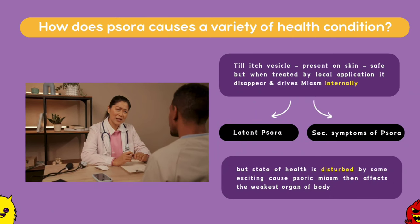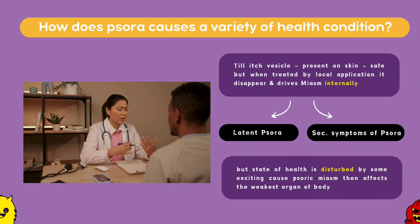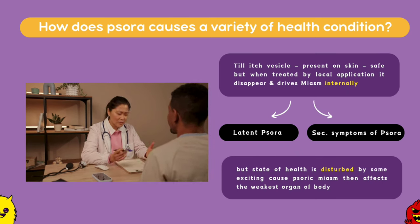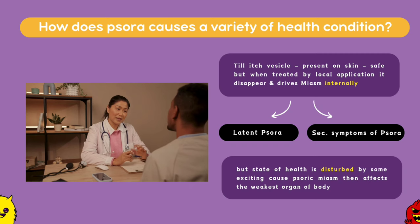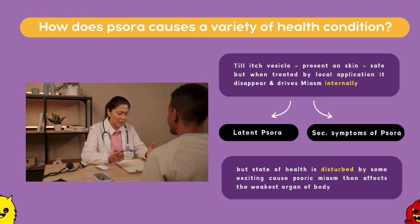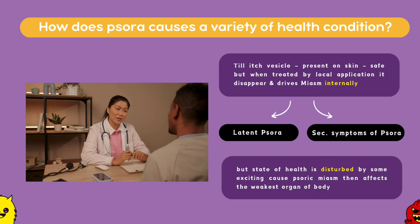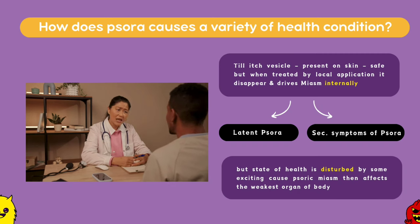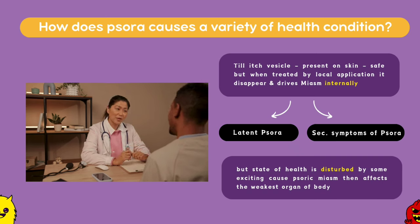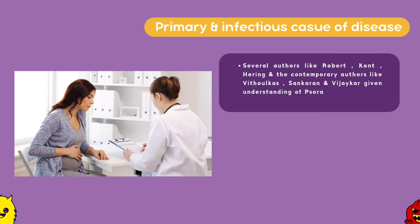But how does Psora cause a variety of other health conditions? Till the itch vesicle is present on the skin surface, it is considered safe for the person. But when it is treated by some local application, it disappears and drives the Miasm internally, creating either latent Psora or secondary symptoms of Psora. When the disease is driven inwards, if the person is in a state of good health both physically and mentally, it doesn't cause any secondary symptoms and the Psora remains dormant — known as latent Psora. But when the state of health is disturbed by some exciting cause, the Psoric Miasm then affects the weakest organ of the body and causes secondary symptoms. Thus, Hahnemann considers Psora to be just a primary and infectious cause of disease.